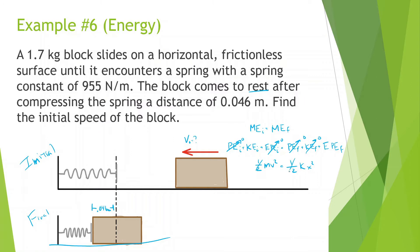We can get rid of the one half because it's on both sides. We know the mass is 1.7, v squared is what we're looking for, k is 955, and x is 0.046 squared. So: 0.046 squared times 955 divided by 1.7, then find the square root of that, and we get 1.09 meters per second. I would highly recommend writing it all out and finding what goes to zero and what are the important pieces of information.